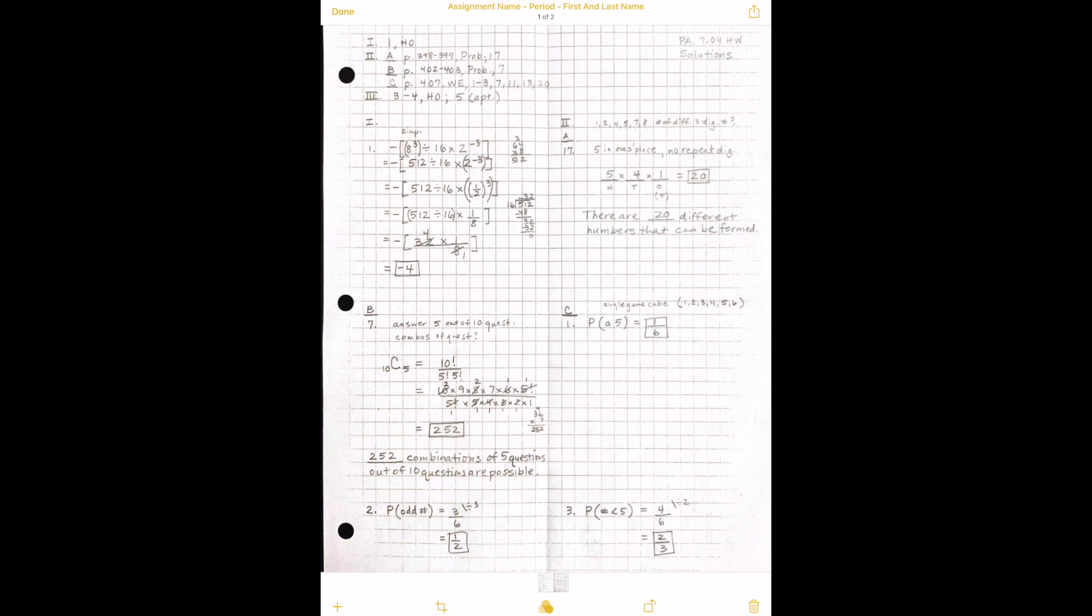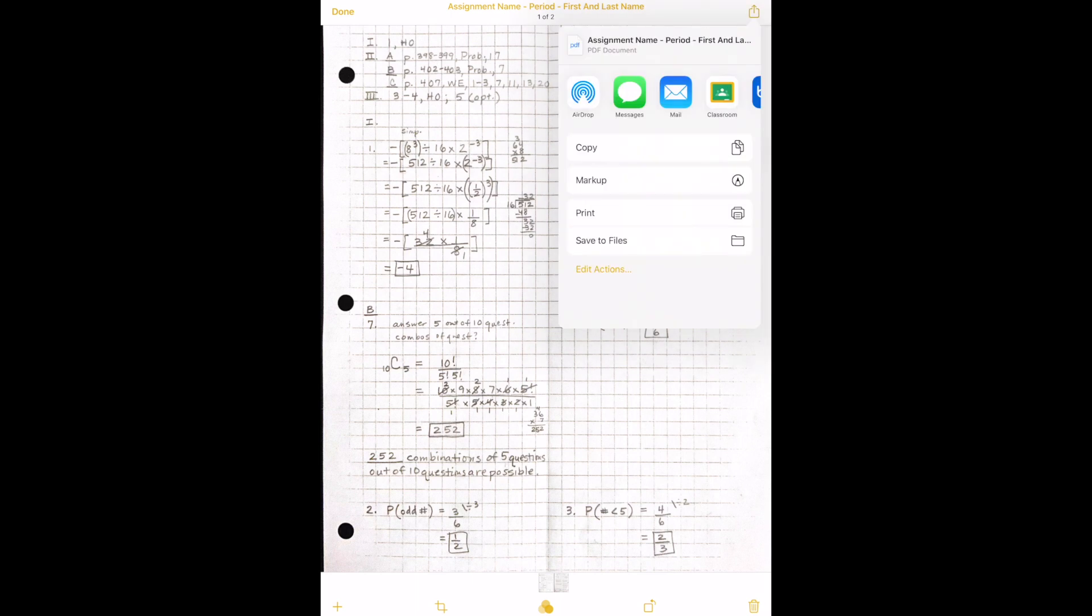So now what I want to do, because I'm going to send this off, I'm going to click the little send button at the top right-hand corner where it has an arrow going up. So I'll click that, and here you can see where you want to send it to.